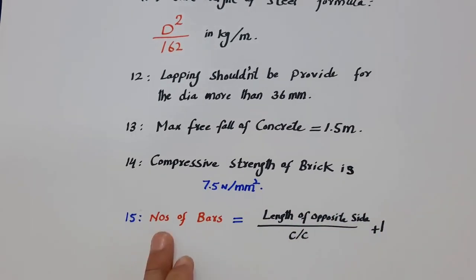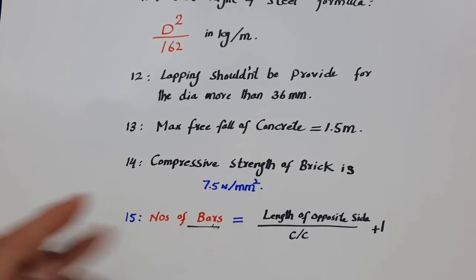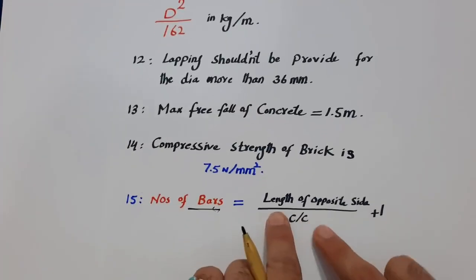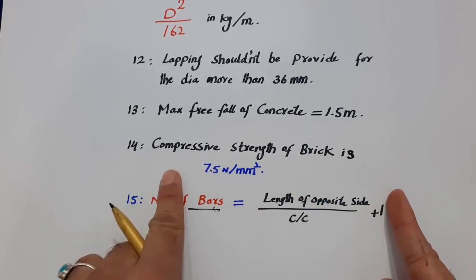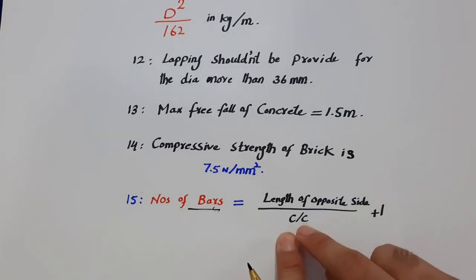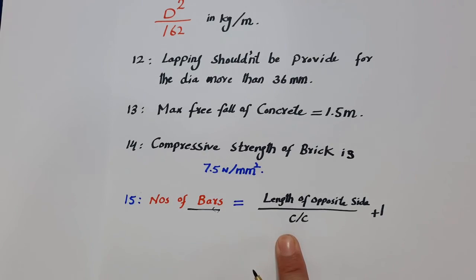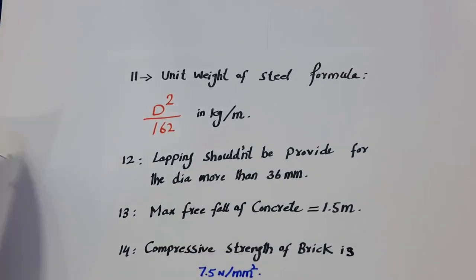The fifteenth one is how to find the number of bars in a slab. The formula is: number of bars = (length of opposite side ÷ spacing C/C) + 1. This gives you the total number of steel rods in a slab.